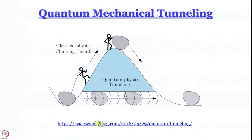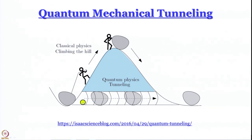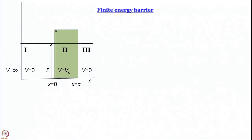The situation is like a cartoon available on the internet where you are supposed to push a stone above a small hill. In the classical world you push it up and surmount the energy barrier. In the quantum world, as suggested by the alpha particle experiment, a quantum particle can tunnel through — as if there is a tunnel — so you go from here to here without going up the hill. This phenomenon is called quantum mechanical tunneling, and it occurs when we have a potential barrier that is finite and not infinite.